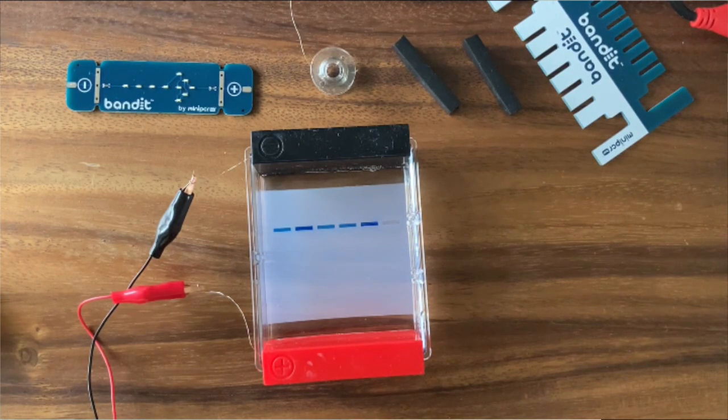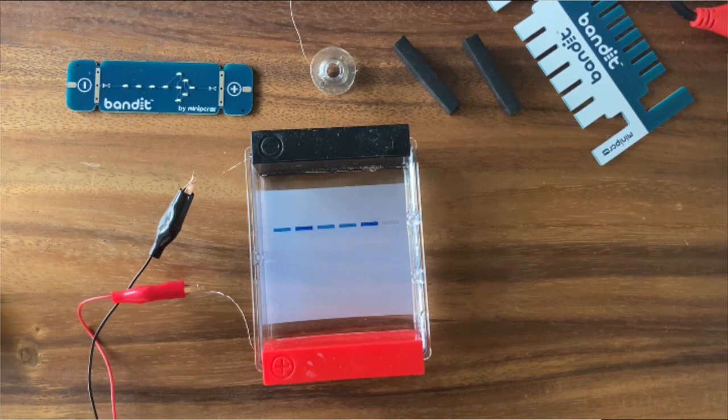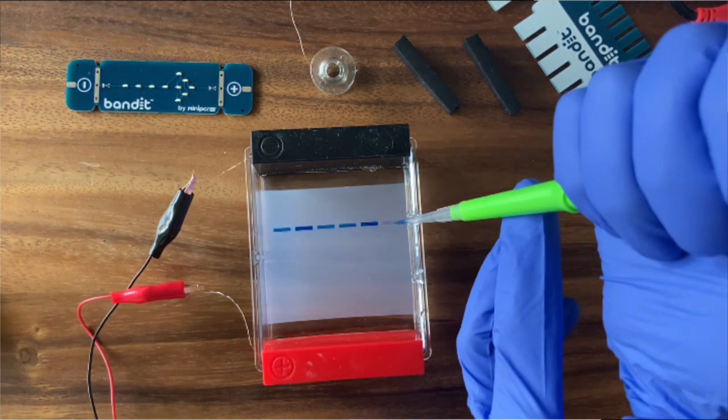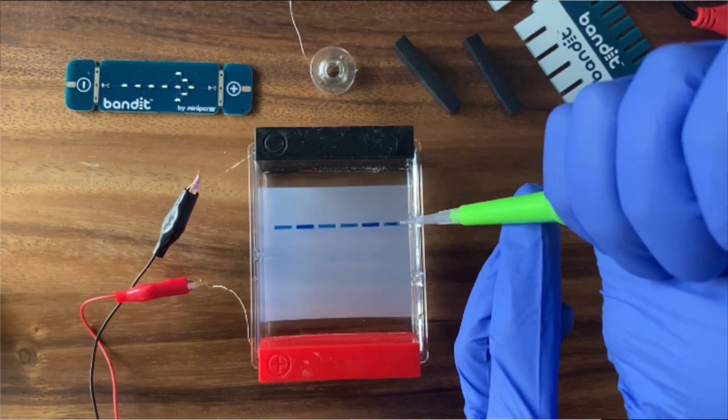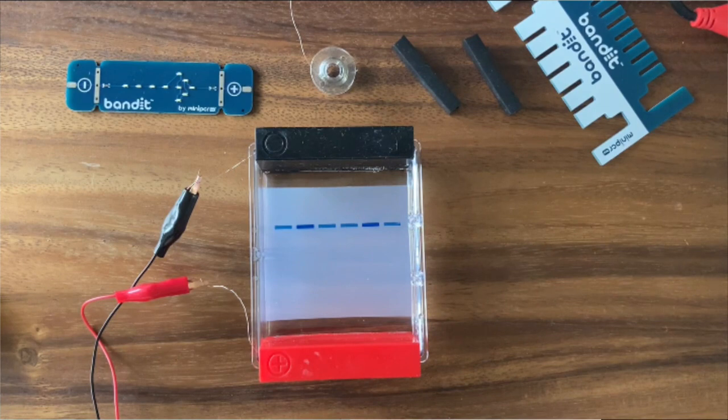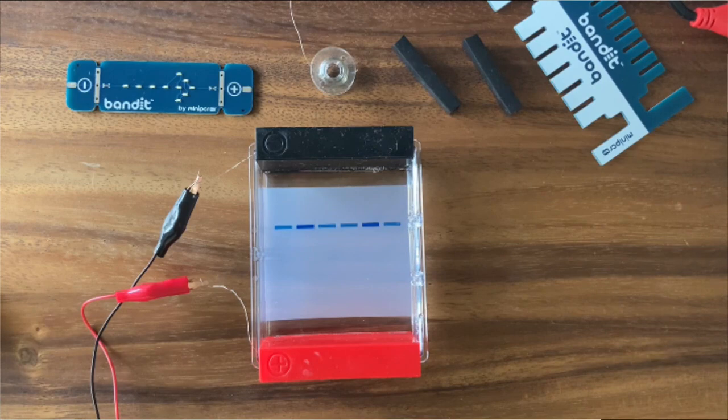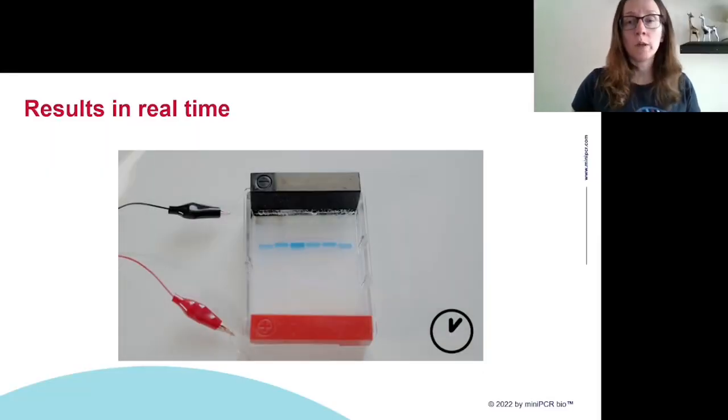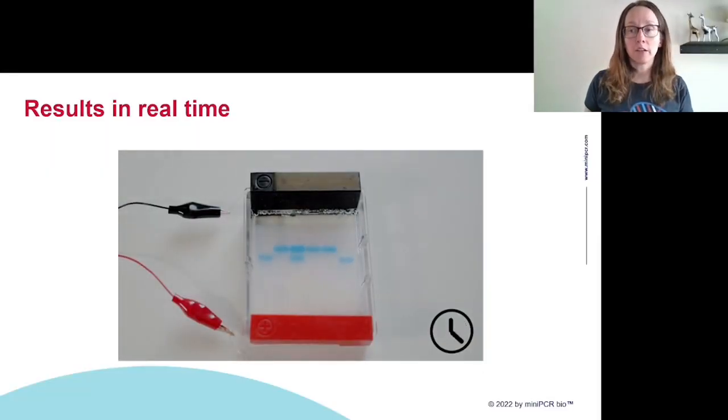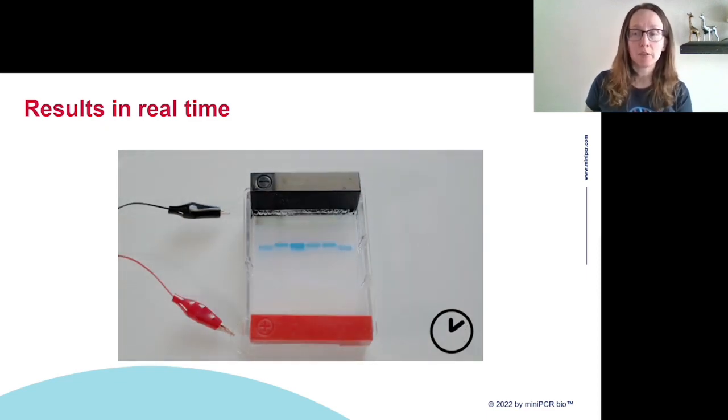I'm just finishing up with my last sample here, loading it in the sixth well. You can see those nice blue rectangles are telling me I've loaded it as I intended to. I didn't inadvertently inject the sample into the side or the bottom of the gel. It looks good. It looks like we're ready to run.